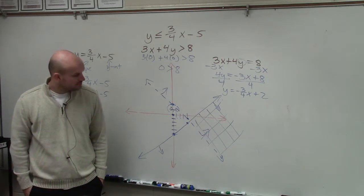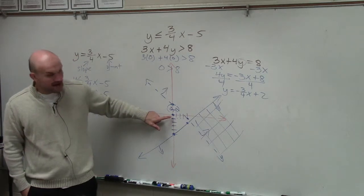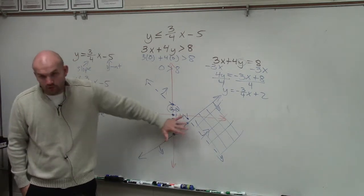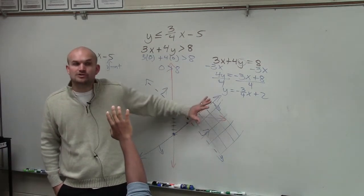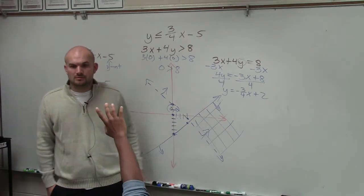Since the second one is false, why do you shade upwards? Because if that point's false, that means all the points below the line are false. That means all the points above it are true. And we always want to shade where it's true.